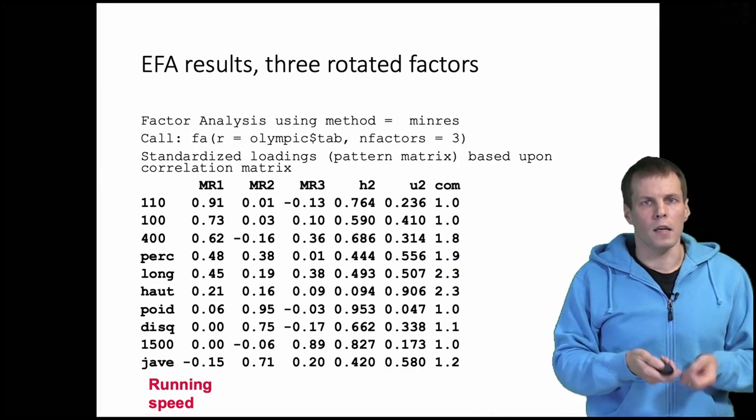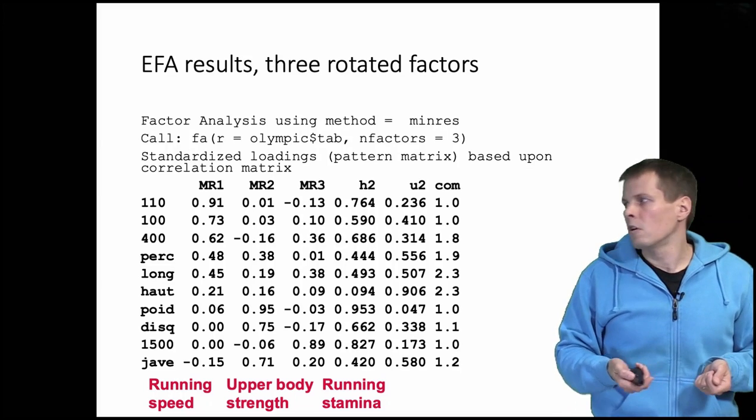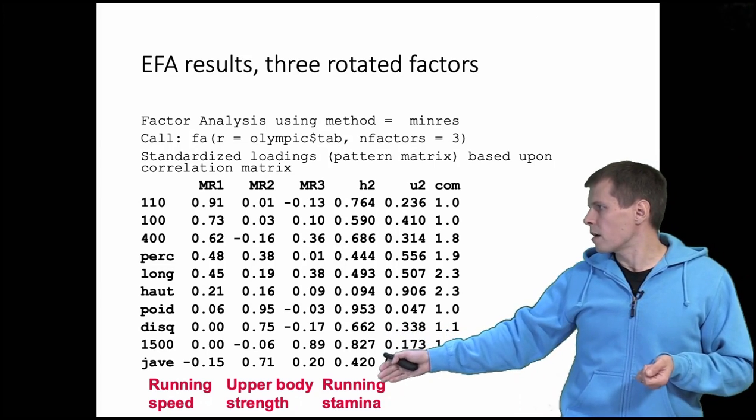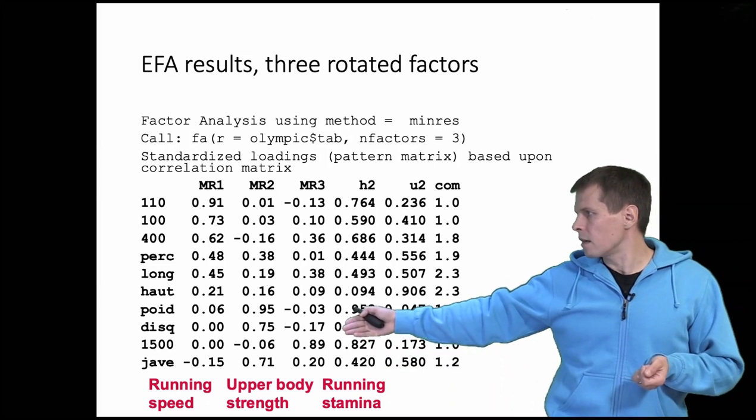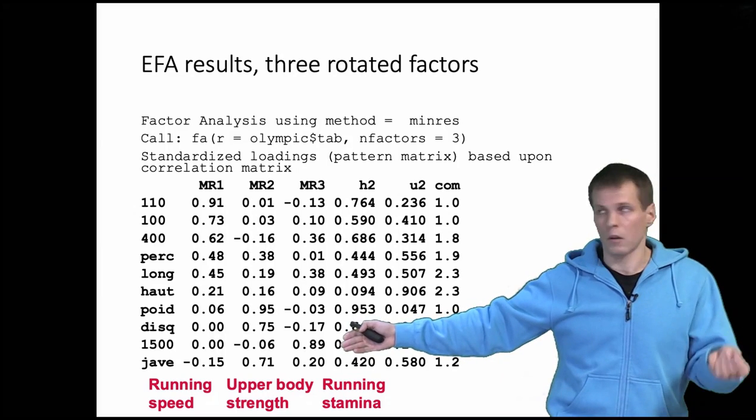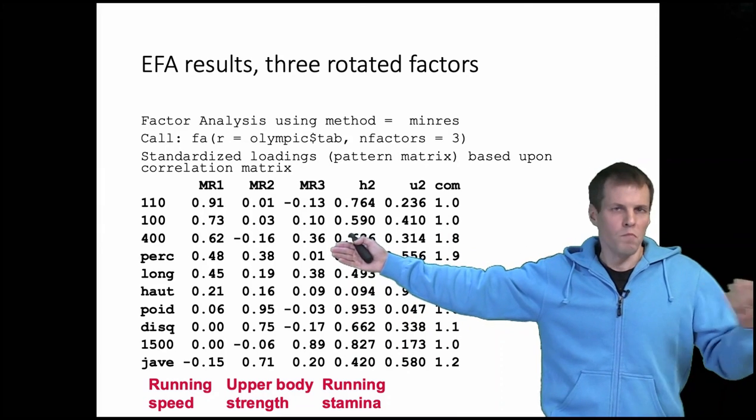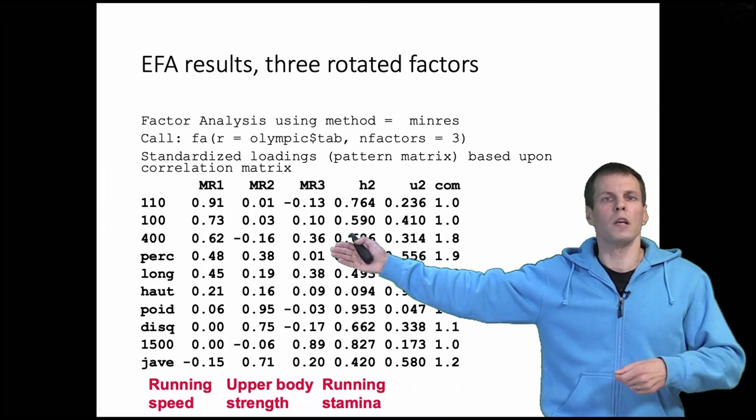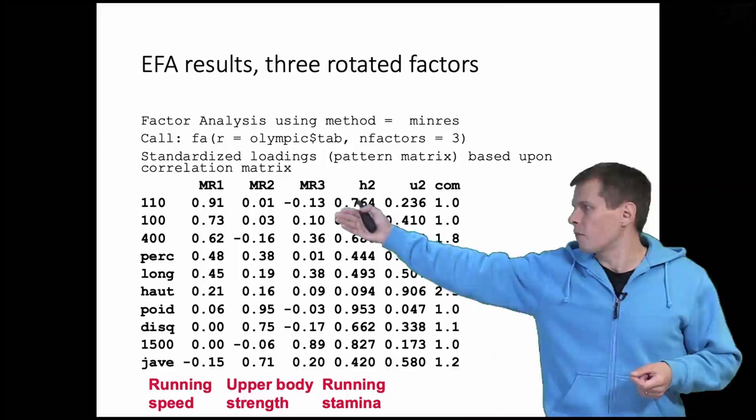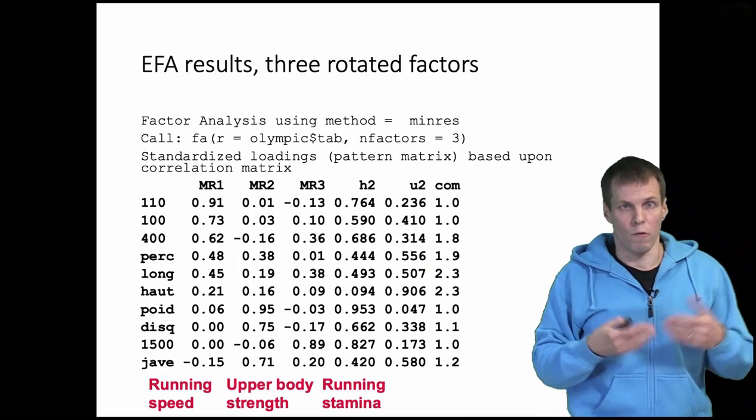The second factor contains the upper body strength sports still, and then the third factor contains running stamina. You basically need stamina for 1500 meter run which is the main item that loads on this. 400 meters run loads to some extent because you need more stamina for that than for example the 100 meter run.